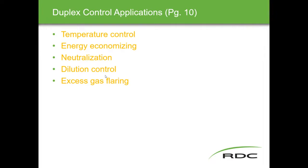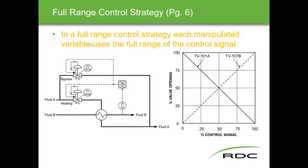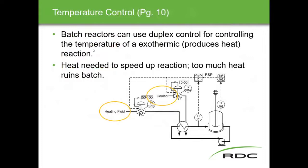All items in orange tie to self-test questions. Looking at temperature control first: a batch reactor example where we're mixing materials in a tank and require heat to drive the reaction. Too much heat ruins the reaction, so batch reactors are a good example of a temperature control scheme using duplex control to simultaneously control the flow of coolant and the flow of heating fluid.